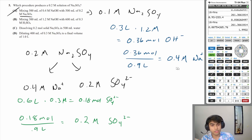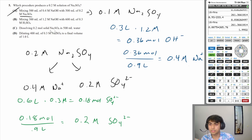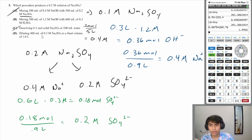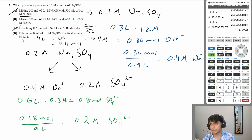Let's verify C and D are wrong. C says dissolving 0.2 moles of sodium sulfate in 500 mL of water: 0.2 mol / 0.5 L = 0.4 M — not 0.2 M. D dilutes 400 mL of 0.3 M sodium sulfate to 1 L: 0.12 moles / 1 L = 0.12 M — also wrong. So the answer is B.